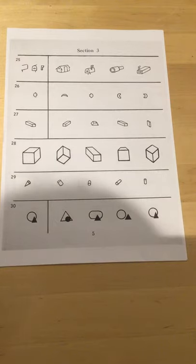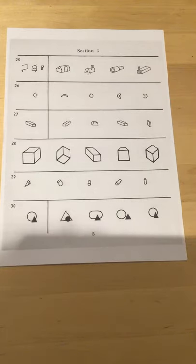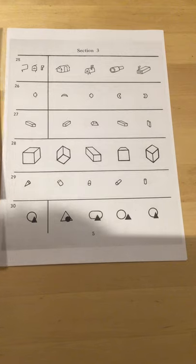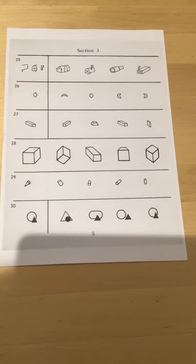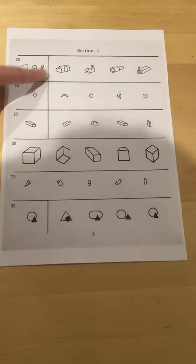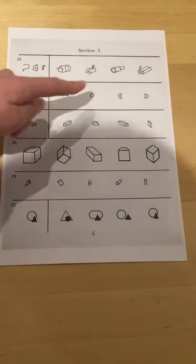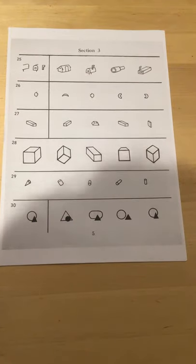In section three we're moving on to more visual closure, spatial perspective discrimination of object and abstract figure details.